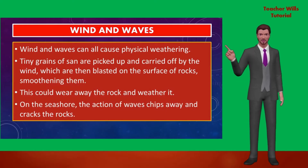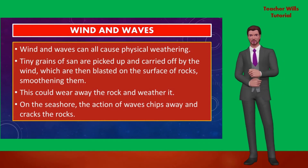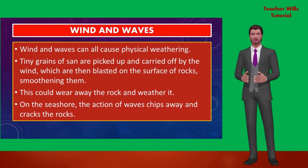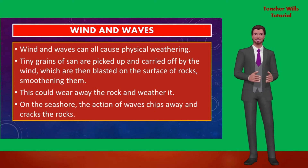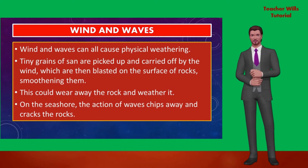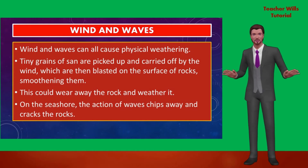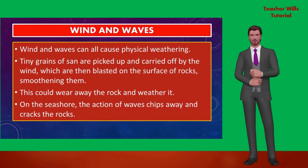Wind and waves can also cause physical weathering. Tiny grains of sand are picked up and carried by the wind, then blasted on the surface of rocks, smoothening them and wearing them away. On the seashore, the action of waves chips away and cracks the rocks.